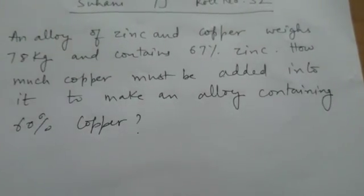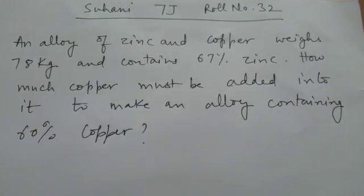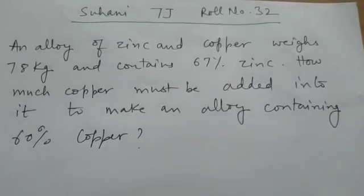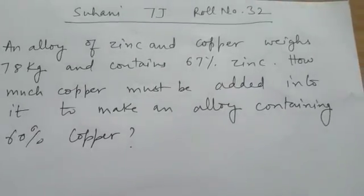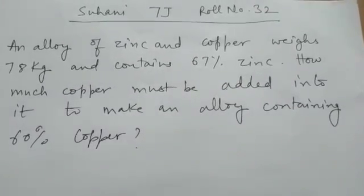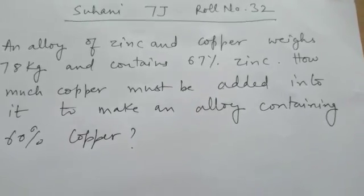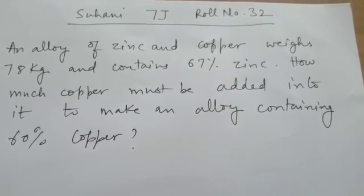Let me read the question. An alloy of zinc and copper weighs 78 kg and contains 67% zinc. How much copper must be added into it to make an alloy containing 60% copper?